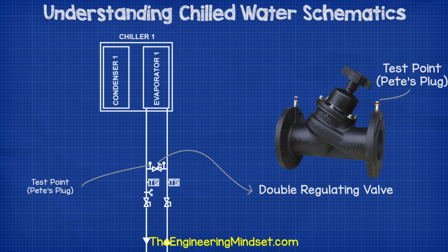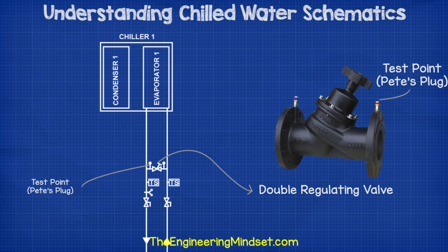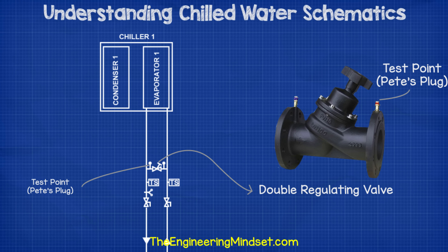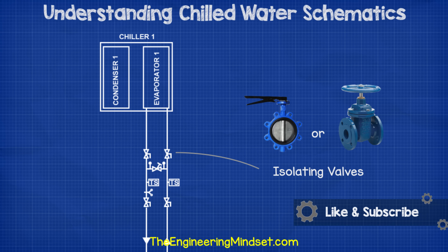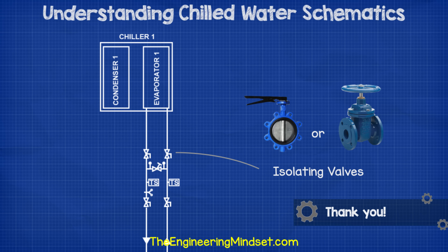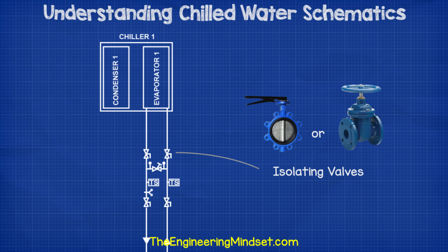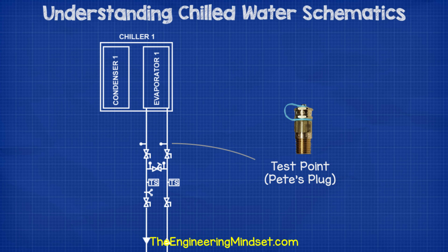Next we have a bypass line, and in this example there's a double regulating valve between the two lines, but it's more common these days to have just an isolating valve here, which is normally closed, or there isn't a bypass line at all. These are used to either flush the system and bypass the chiller to stop dirt going into the heat exchanger during the system clean, or in this case it's used to balance the system as it's an old constant volume system. This can be used to simulate the pressure drop of the chiller if the chiller is isolated for maintenance. Then because we have a bypass line, we'll also have some more isolating valves, which allows the chiller to be cut off from the system but the bypass line can still be used. In newer systems you will find a motorized control valve here, connected to the BMS, which allows remote control. Then we'll have some test points, also known as peak plugs, which allow technicians to plug measurement devices in to take temperature and pressure measurements.